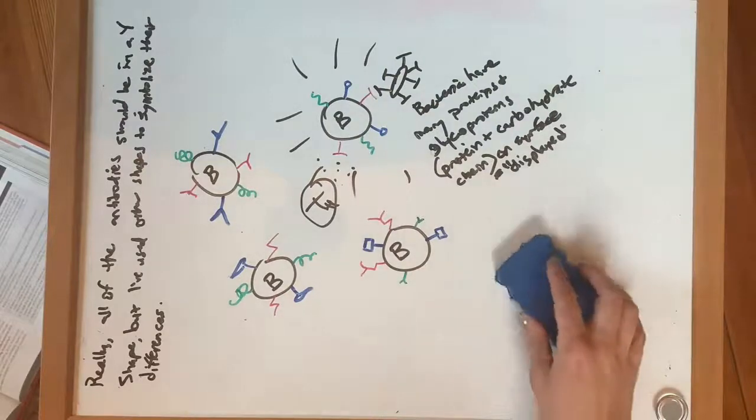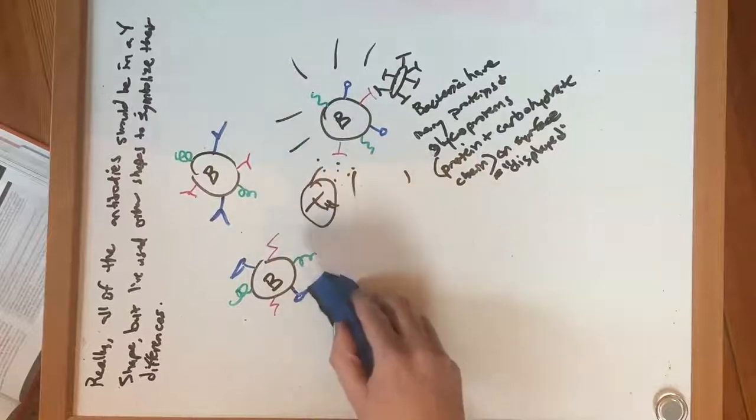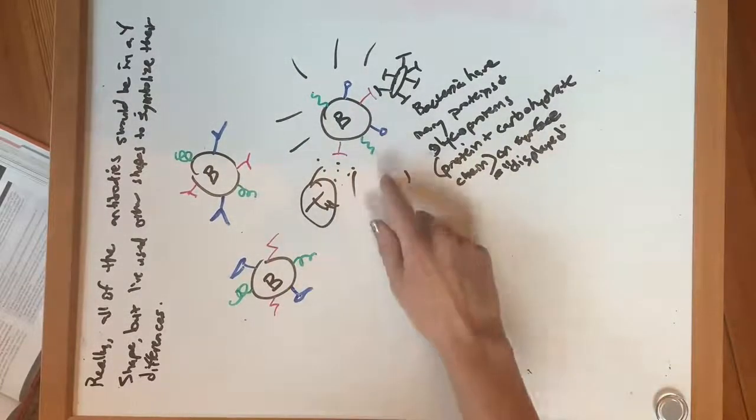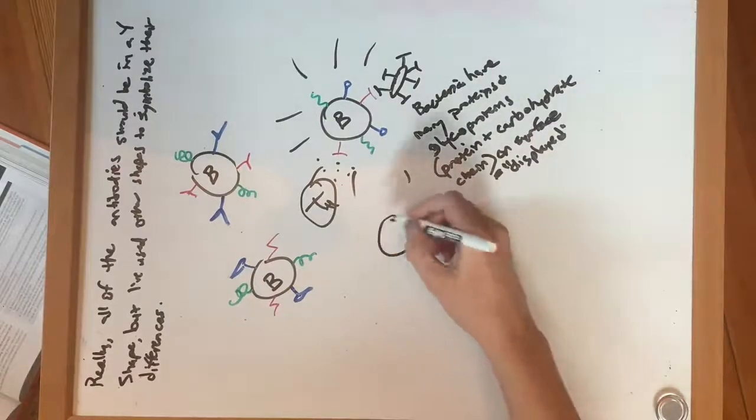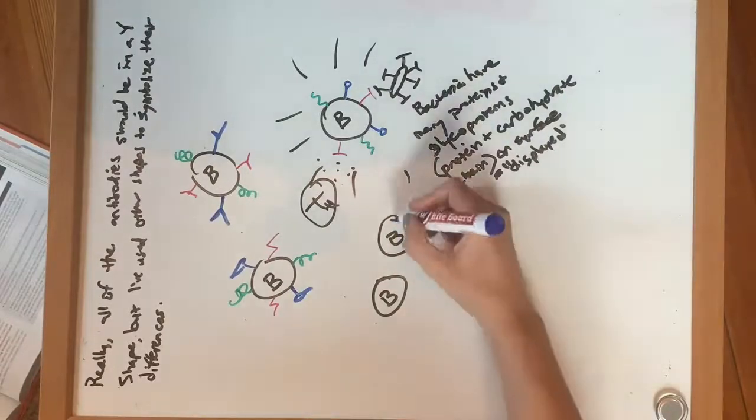And the really important thing about this is, you know, we're not getting rid of these other B cells. We're only making more of this specific B cell. So that then we end up having lots of this specific B cell.